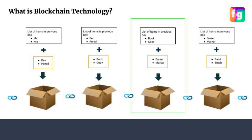So taking the example of the third box — you placed eraser and marker inside, plus you added one more thing: the list of items that were in the previous box. The question is why did you add that? The advantage we get from this is: suppose tomorrow someone comes and makes some changes in the second box — takes out the book and copy and adds some other toy, for example.